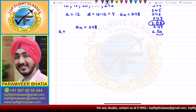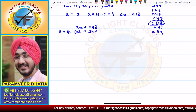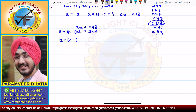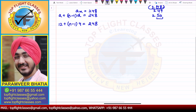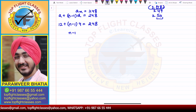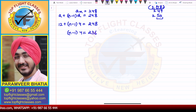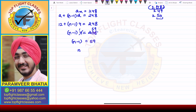Using the nth term formula: a + (n − 1) × d = 248. Substituting, 12 + (n − 1) × 4 = 248. So (n − 1) × 4 = 236, which gives n − 1 = 59, therefore n = 60.